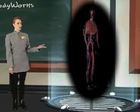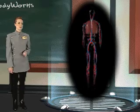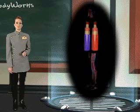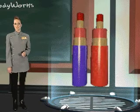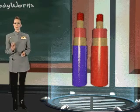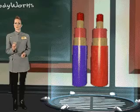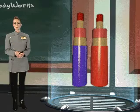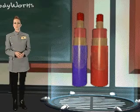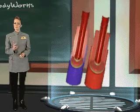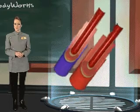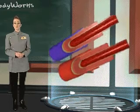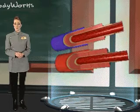The circulatory system is a network of vessels that enables the heart to pump blood through your body. Blood vessels are small tubes that are responsible for carrying blood to and from all parts of your body. The human circulatory system is composed of three types of blood vessels: arteries, veins, and capillaries.